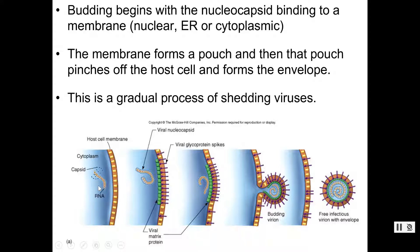We have nucleic acid that gets made — whatever it came in as, RNA or DNA. Then the capsid proteins get made and we have created this assembly — a nucleocapsid. The virus, during protein synthesis, has made some matrix proteins. Those get laid down on the inside of the cell membrane of the eukaryotic host cell, and the nucleocapsid will come and bind to these viral matrix proteins.